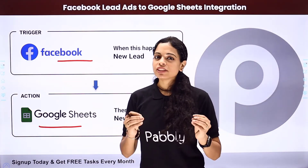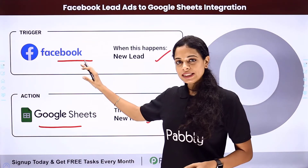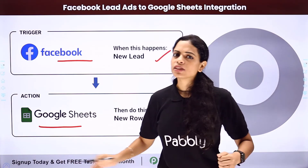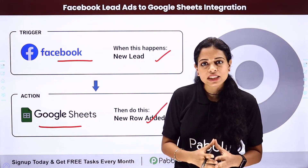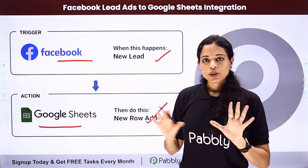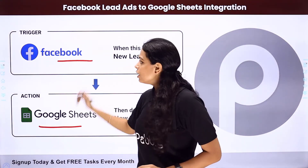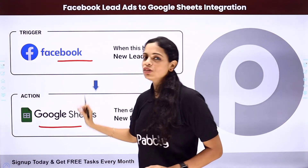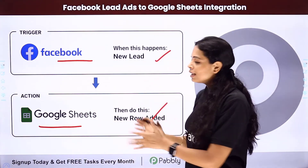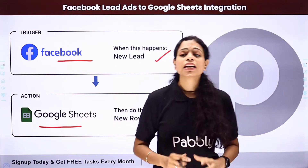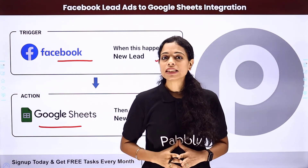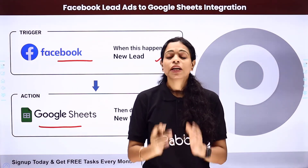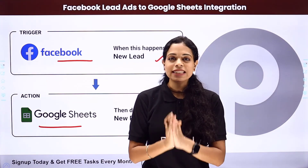Every time you receive a new lead through Facebook Lead Ads and you want it added to Google Sheets — so your team can take necessary actions to follow up — you can do this by integrating these two applications, with Facebook Lead Ads as your trigger application and Google Sheets as your action application. Similarly, many more applications can be integrated with Google Sheets and automations can be set up to make things really easy for you.